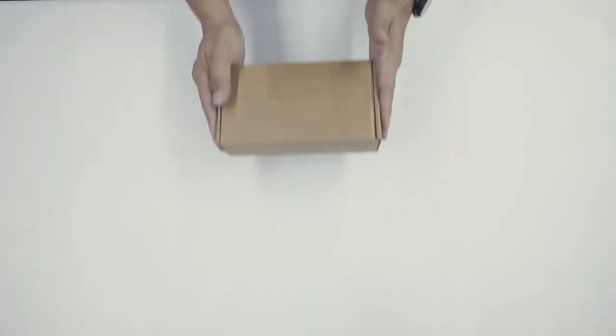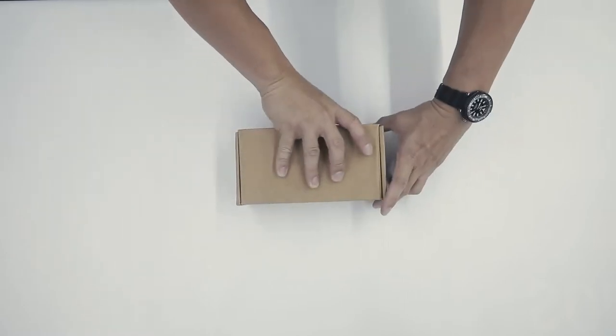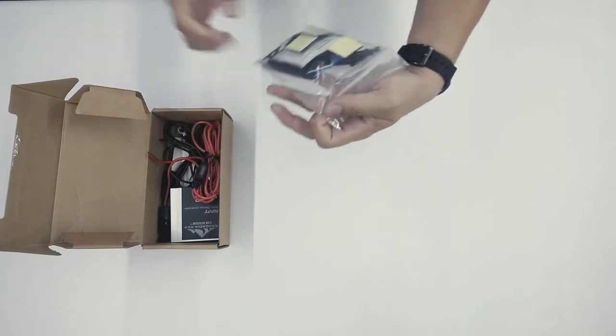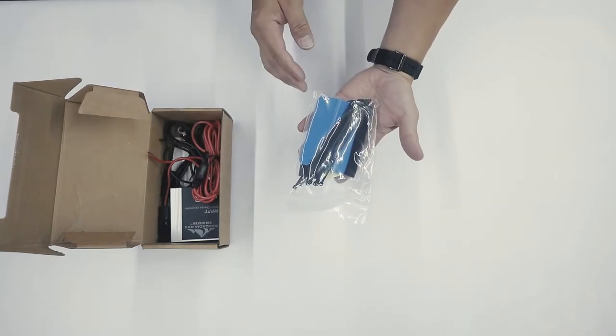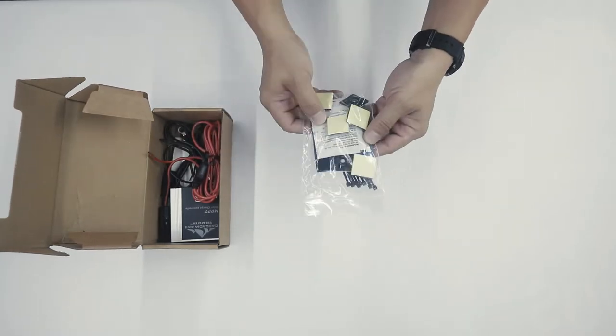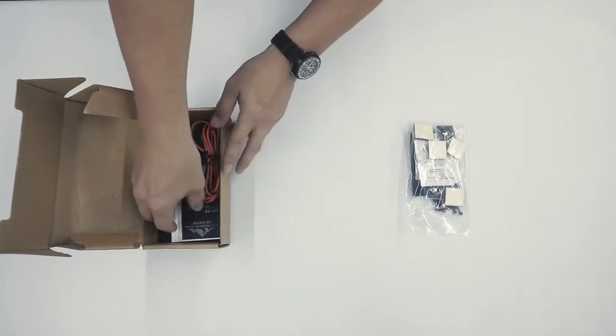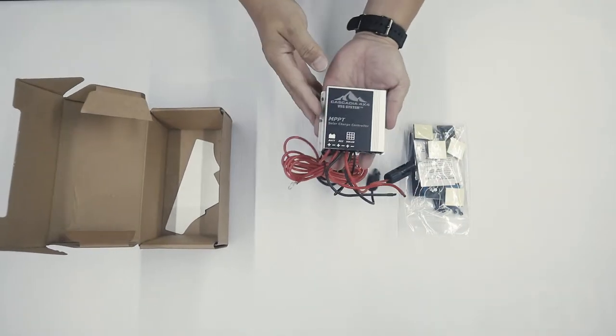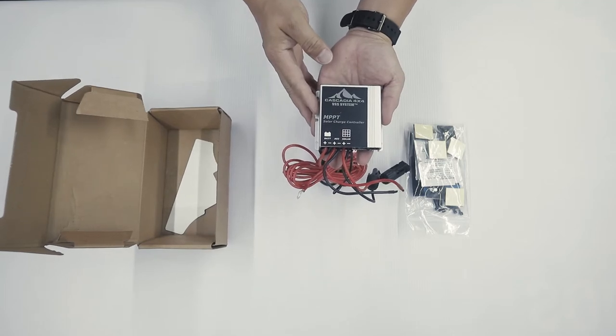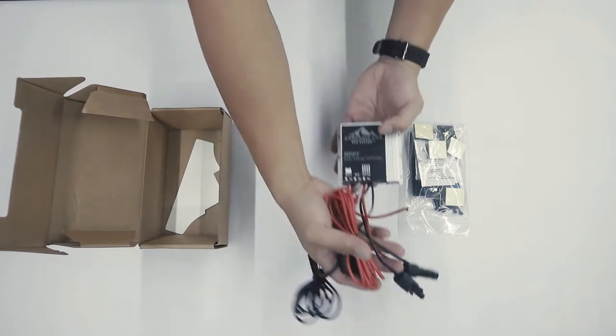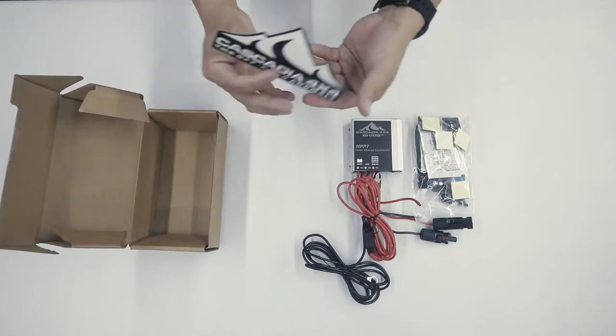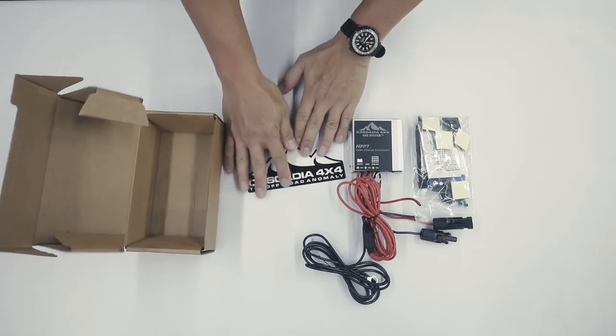Found in the first box are the following: plastic container with squeegees, zip ties, adhesion enhancer, the MPPT solar charger module, and a Cascadia sticker. We'll set this aside for now.